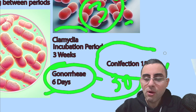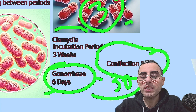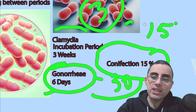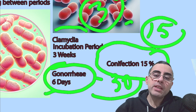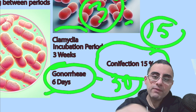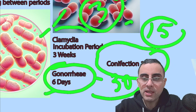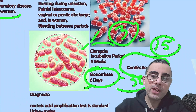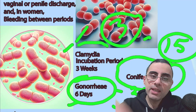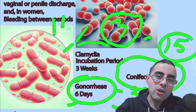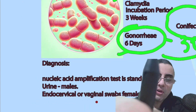Co-infection is also common, occurring in around 15 percent of cases. Co-infection means both infections exist together, so a person has chlamydia and gonorrhea at the same time.